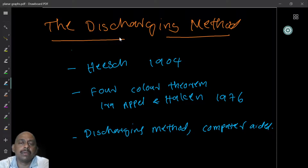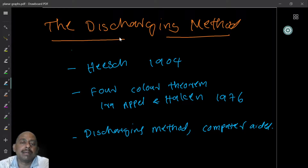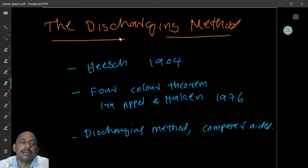After 125 years, in 1976, it was finally proved by Appel and Haken. These two people proved this result using a technique called the discharging method. This discharging method proof became controversial because the number of cases was too huge — they had to use computer help, writing algorithms to verify whether the result is correct. The computer basically verified the calculations.